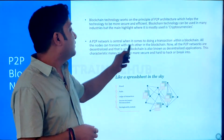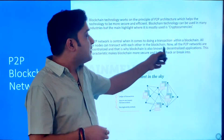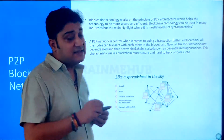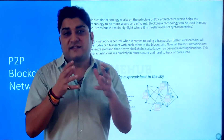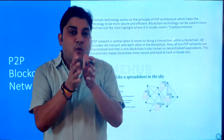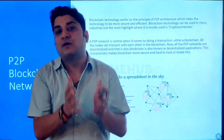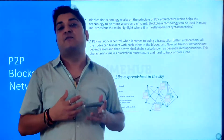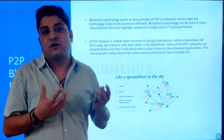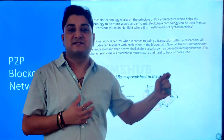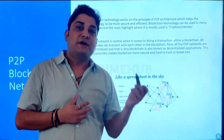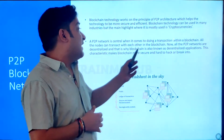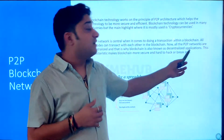A peer-to-peer network is central when it comes to doing transactions within a blockchain. All nodes can transact with each other in the blockchain. All peer-to-peer networks are decentralized — meaning the system is not relying on one particular authority or server. When anybody asks you what blockchain is, just remember it's a decentralized system, where not one particular system has control over others. That is why blockchain is also known as a decentralized application.